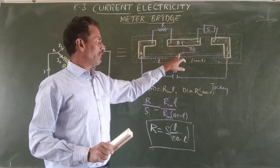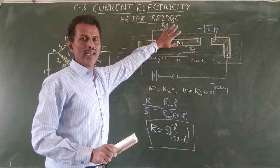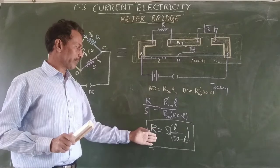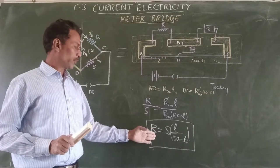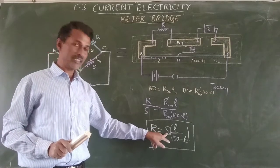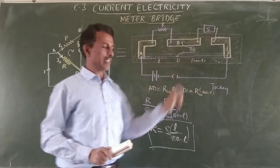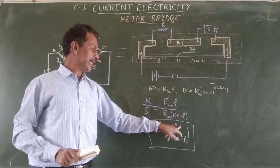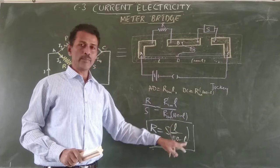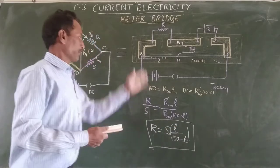So when the galvanometer deflection is zero, this is a balanced Wheatstone bridge. From the balancing condition, the unknown resistance R equals S × L / (100 − L), where S is the resistance introduced in the standard resistance box and L is the balancing length in centimeters.